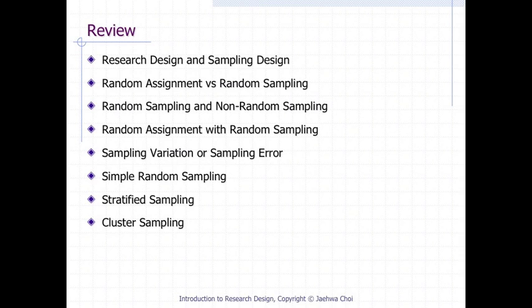In the previous lecture we learned: 1. The relationship between research design and sampling design — sampling design is a particular component of a research design. 2. The relationship between random assignment versus random sampling — random assignment and random sampling are different procedures in research design.